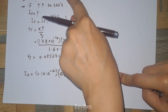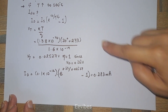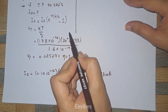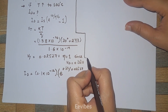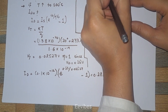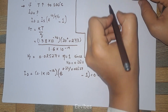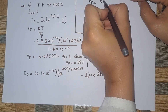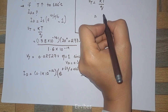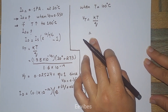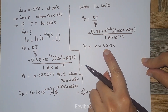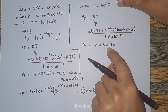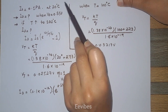Now let's see when we increase the temperature how the thermal voltage changes. When temperature is equal to 100 degrees centigrade, VT = kT/Q, and after solving this you get the value of VT equal to 0.03217 volts. You can see clearly that when the temperature increases from 20 to 100 degrees centigrade, the thermal voltage is increasing.